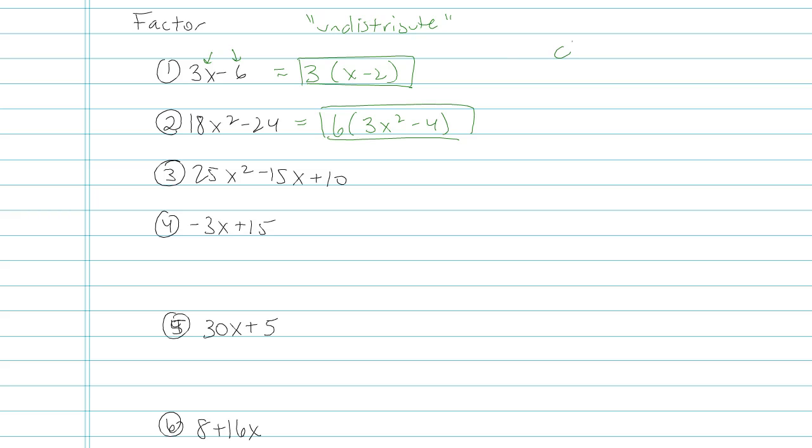Let's talk about checking your work before we get too far. Since factoring is like undistributing, I can check my work by distributing. If I wanted to check my work for number 2, I would distribute 6 times both of those things in parentheses. And indeed, I'd get 18x squared and then 6 times negative 4. That's how I know I did it correctly.